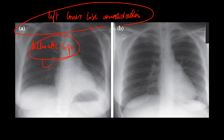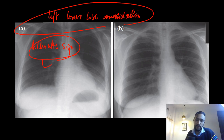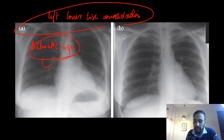So in every X-ray, try to look at these two things very carefully. If you are not able to see any border, then there is consolidation in that part of the lung. You can also write in your reports that there is loss of silhouette of that cardiac border.